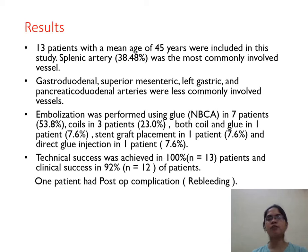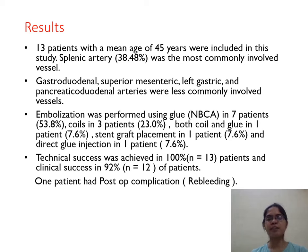Results: 13 patients with a mean age of 45 years were included in this study. Splenic artery (38.48%) was the most commonly involved vessel. Gastroduodenal, superior mesenteric, left gastric, and pancreaticoduodenal arteries were less commonly involved. Embolization was performed using glue (N-butyl cyanoacrylate) in 7 patients, coils in 3 patients, both coil and glue in 1 patient, stent graft placement in 1 patient, and direct glue injection in 1 patient. Technical success was achieved in 100% (13 patients) and clinical success in 92% (12 patients). One patient had a post-procedure complication of re-bleeding.